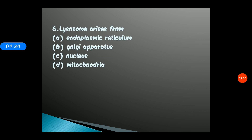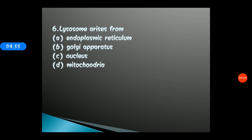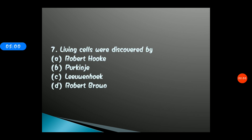Question 6: Lysosome arises from — options: A) Endoplasmic reticulum, B) Golgi apparatus, C) Nucleus, D) Mitochondria. The correct answer is option B, Golgi apparatus. Lysosomes arise from the Golgi apparatus.